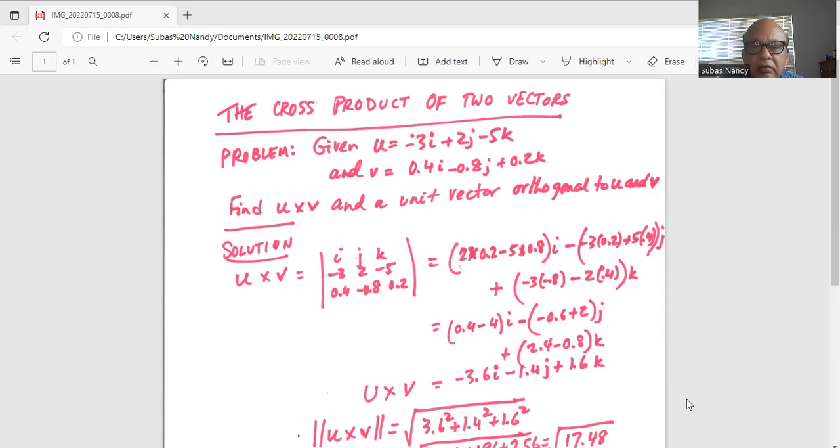Then to find the coefficient of i we eliminate the first row first column. We are left with 2, minus 5 and minus 0.8 and 0.2. So it is 2 times 0.2 minus, two minuses make it plus, 5 times 0.8.